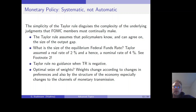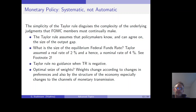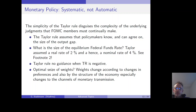The Taylor rule provides no guidance when the Taylor rate is negative, because its focus is on the interest rate — we cannot use the Taylor rule anymore and must find other measures to implement a looser monetary policy. Additionally, the optimal sizes of the weights change according to changes in preferences and the structure of the economy, especially when the channels of monetary transmission change.